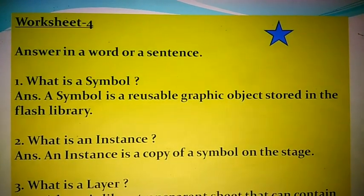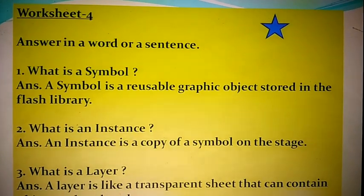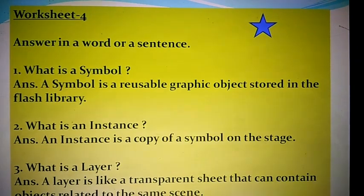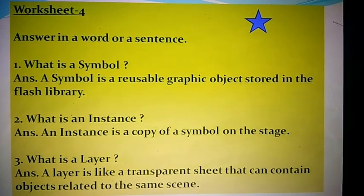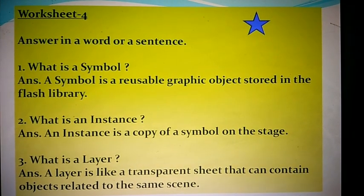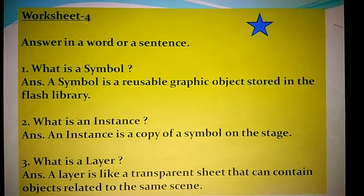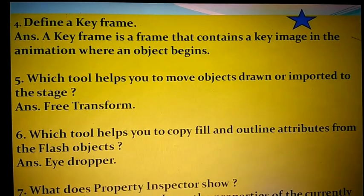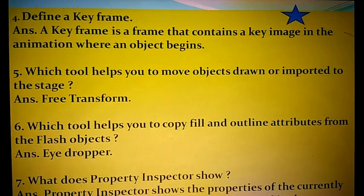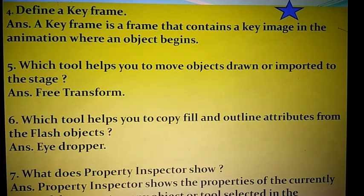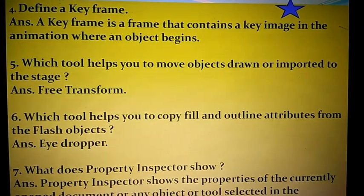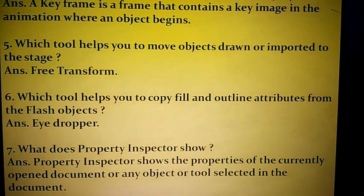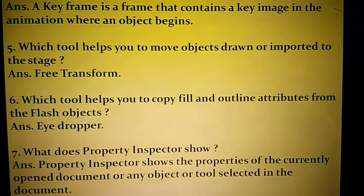Worksheet four — answer in a word or sentence. First: what is a symbol? A symbol is a reusable graphic object stored in the class library. Second: what is an instance? An instance is a copy of a symbol on the stage. Third: what is a layer? A layer is like a transparent sheet that can contain objects related to the same scene. Fourth: define a keyframe — a keyframe is a frame that contains a key image in the animation where an object begins. Fifth: which tool helps you move an object on the stage? Free transform. Sixth: which tool copies fill and outline attributes? Eyedropper. Seventh: what does the property inspector show? It shows the properties of the currently opened document or any object or tool selected.